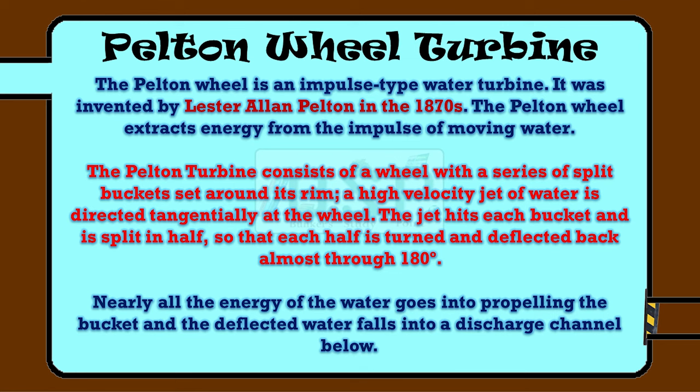The Pelton turbine consists of a wheel with a series of split buckets set around its rim. A high velocity jet of water is directed tangentially at the wheel. The jet hits each bucket and is split in half so that each half is turned and deflected back almost 180 degrees. Nearly all the energy of the water goes into propelling the bucket, and the deflected water falls into a discharge channel below.